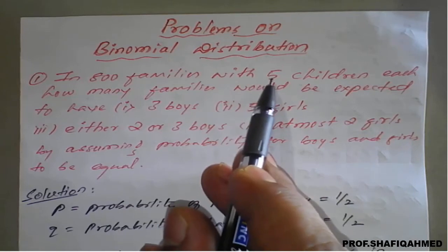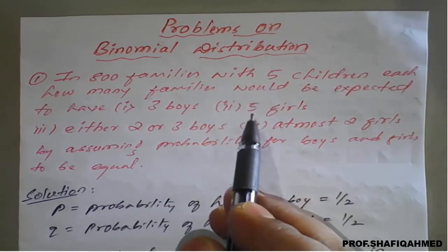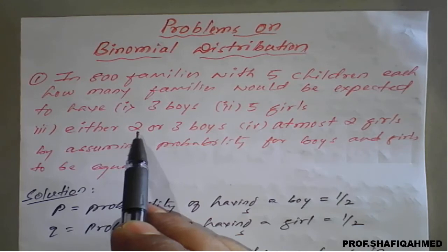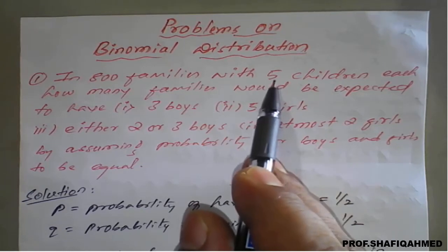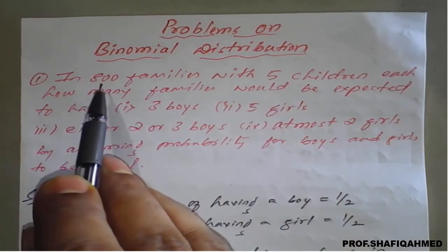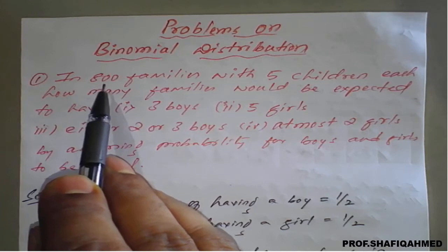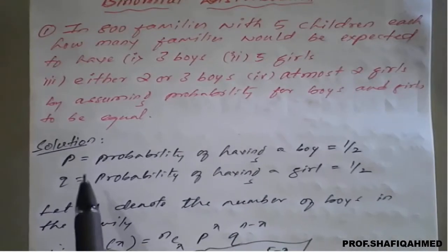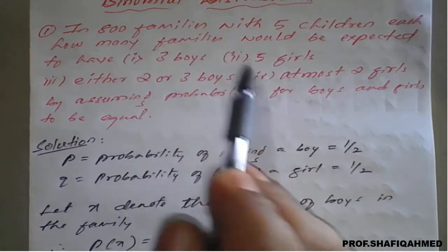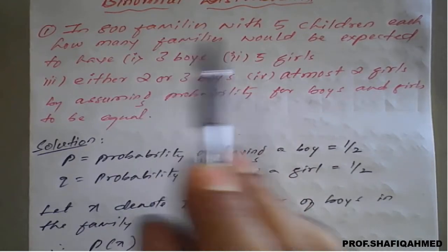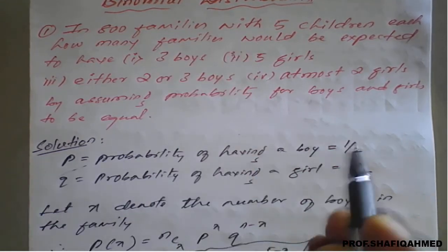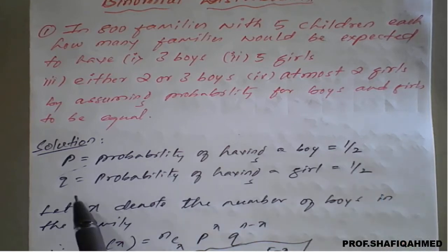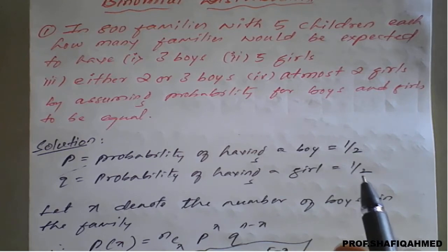3 boys is from out of 5 children; 5 girls out of 5; either 2 or 3 boys means from this only. Remember, the value of small n here is 5, and 800 families means this belongs to capital N. This problem is based on either boy or girl, so we have two outcomes. Therefore, probability of having a boy is 1/2, and similarly probability of having a girl is 1/2.